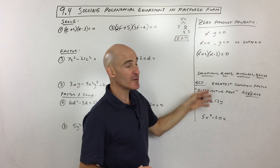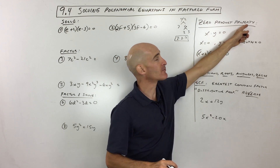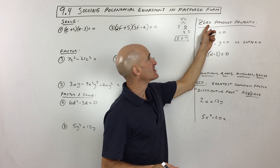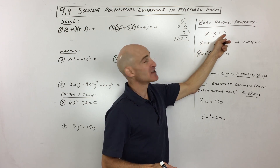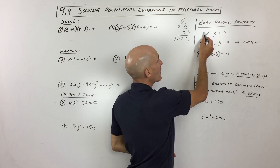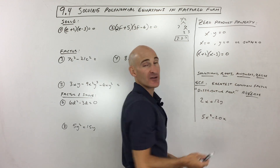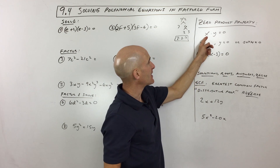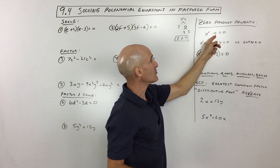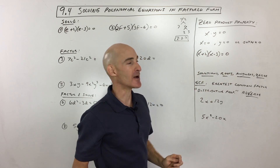Similarly, we're going to do that with polynomials, but first we want to talk about the Zero Product Property. Product means times, and zero just means this product is equal to zero. So when you have a product equal to zero like this, either x has to be zero, or y has to be zero, or both of them have to be zero. Because if x is zero, zero times anything is zero. If y is zero, zero times x would be zero, or if they're both zero, zero times zero is zero.